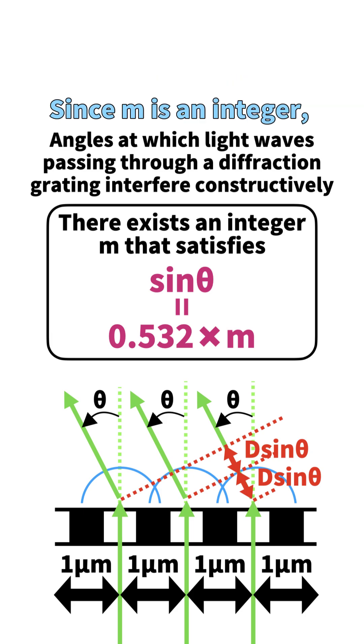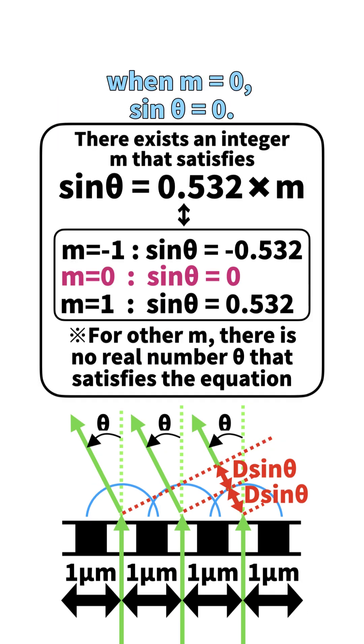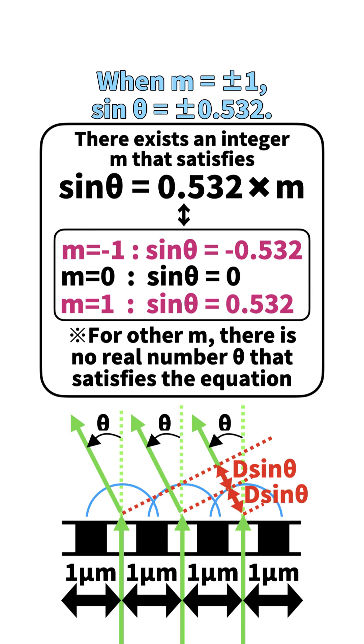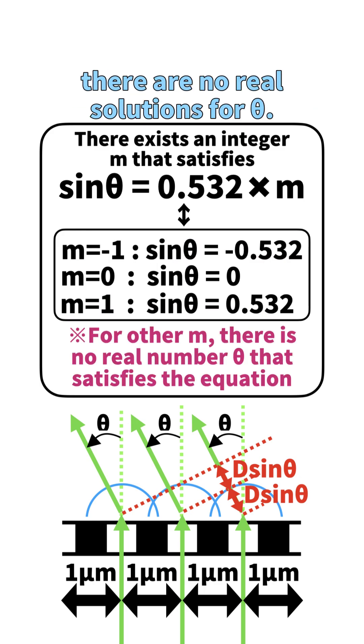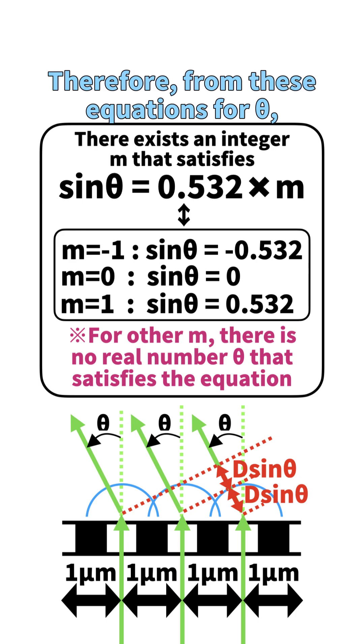Since m is an integer, when m = 0, sinθ = 0. When m = ±1, sinθ = ±0.532. For other values of m, there are no real solutions for θ.